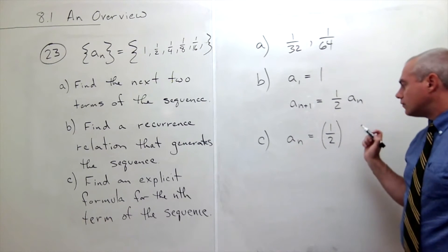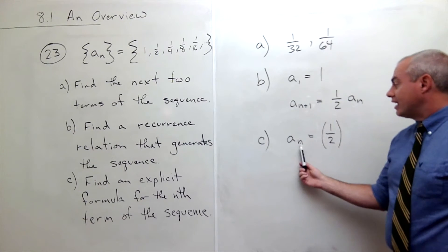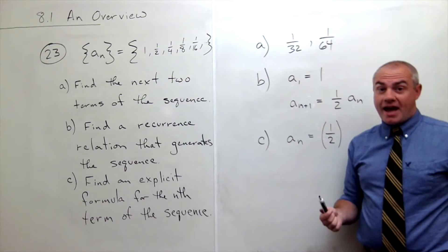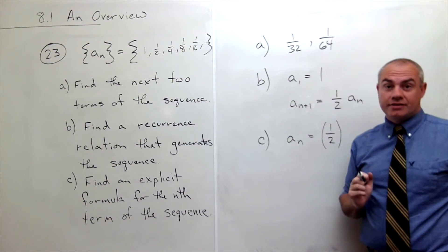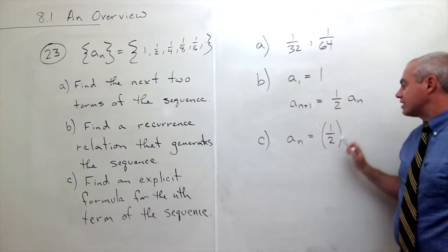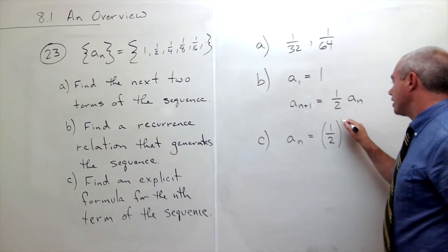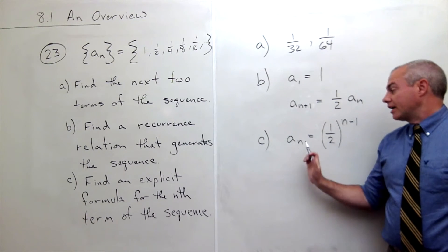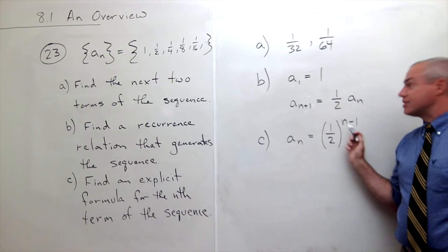Well, I know that the first one, if n is one, I want this to be one. I don't want it to be a half. So putting n up here would be incorrect, because putting n up here would say that a sub one should be a half. But it's not, it's one. But if I put n minus one, now everything's fine. If I plug in one, I get one-half to the zero, which is one.